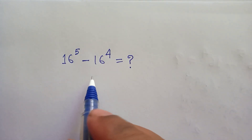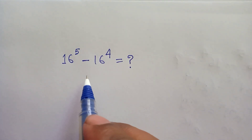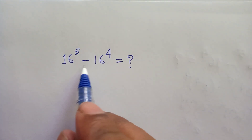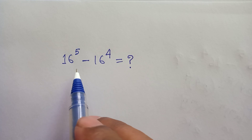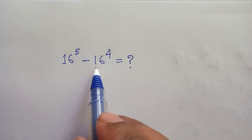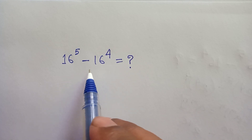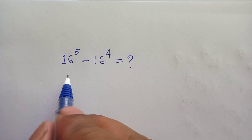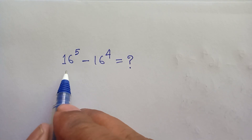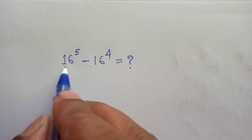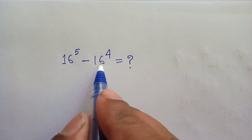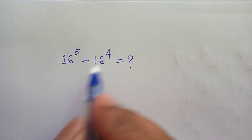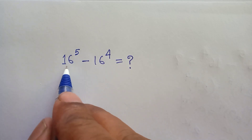Hi everyone, welcome. We'll solve this very big exponent problem — how to solve this math without a calculator correctly. We have given 16 to the 45 minus 16 to the 44. Here both bases are the same but the powers are different.